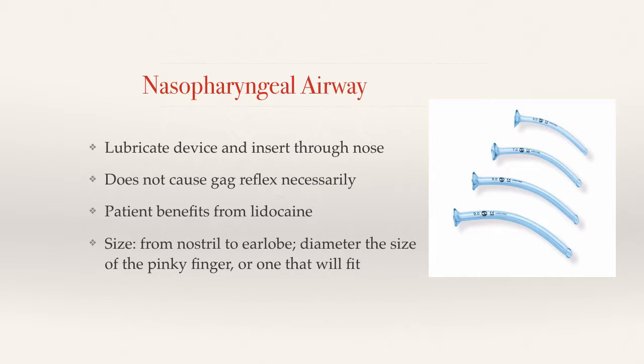The nasopharyngeal airway, or NPA, is a device that you insert through the nose — it's a little tube, and some people call it a nasal trumpet. I could imagine actually using this during moderate sedation. If you need an oral airway, your patient is either way too deeply sedated or something is not going well. I have attempted one once — it was hurting the patient; I should have numbed him up. You lubricate the device and insert it through the nose. It does not necessarily cause a gag reflex.